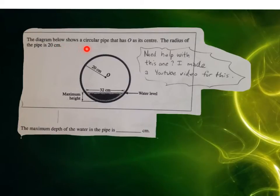So let's take a look at our question. The diagram below shows a circular pipe that has O as its center. The radius of the pipe is 20 centimeters. It looks like we've got a pipe here that we're looking at from the side, and it's got some water inside it. The question is, the maximum depth of the water in the pipe is blank centimeters. So they're asking for the depth of the water. In this diagram here, the depth of the water would be the distance from there to there. That would be the maximum depth of the water.